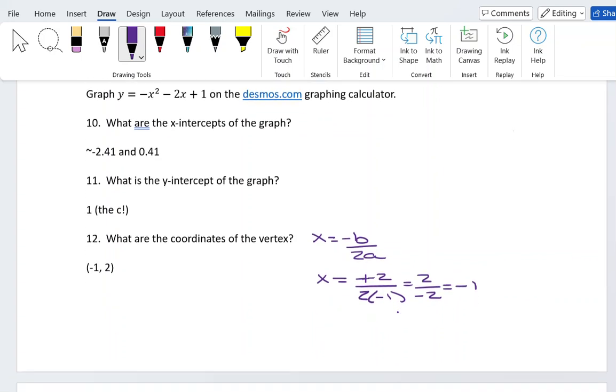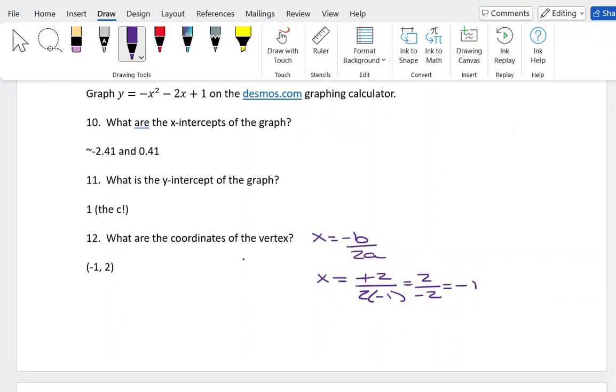Then we plug in to the equation to find y. We would plug in: -(-1)² - 2(-1) + 1. (-1)² is positive 1, then we put the negative sign on it. This changes to +2 and +1. So -1 + 3, which is 2.